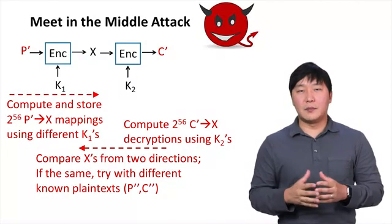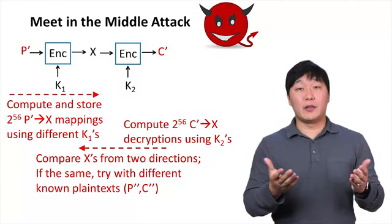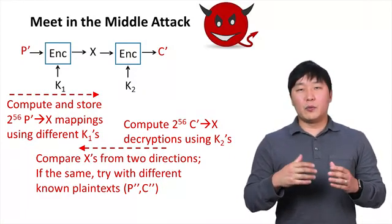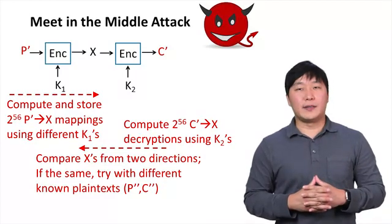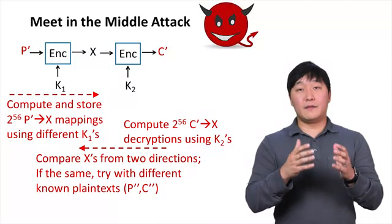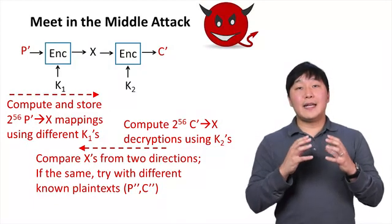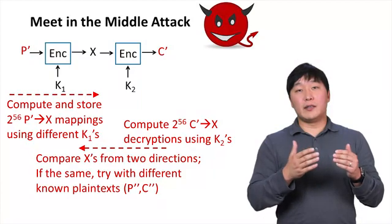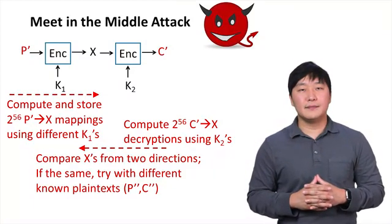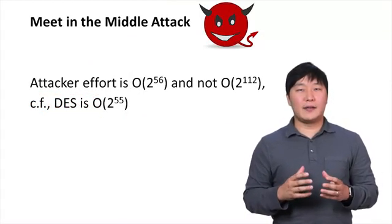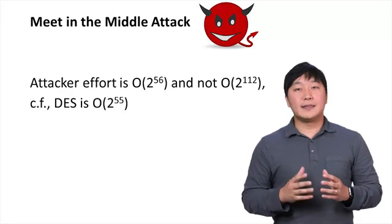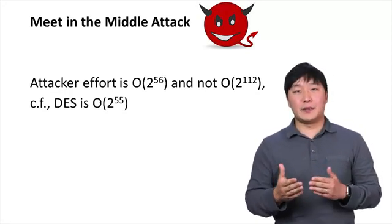There can be false alarms, but the false alarm rate grows exponentially with the number of known plaintext-ciphertext pairs, limiting the number of known plaintexts required. If the correct key pair k1 and k2 is found, it will always yield the correct plaintext p regardless of which plaintext the attacker tries. This reduces the attacker's effort to O(2^56), because the attacker can now compute each DES separately.